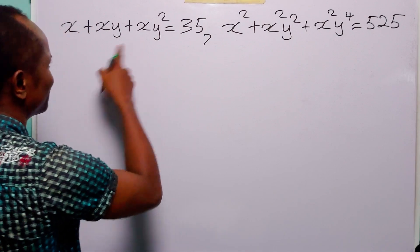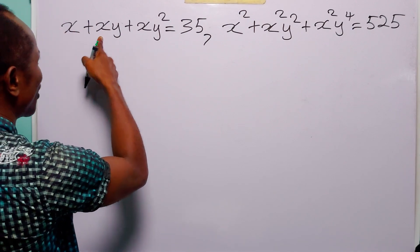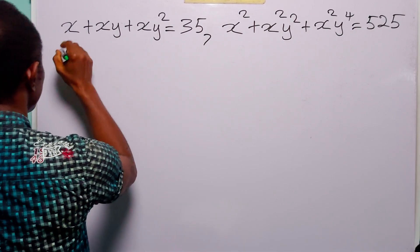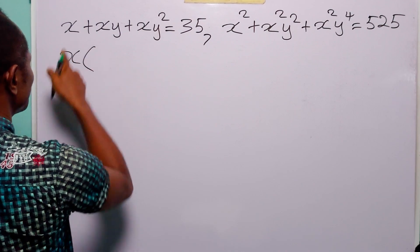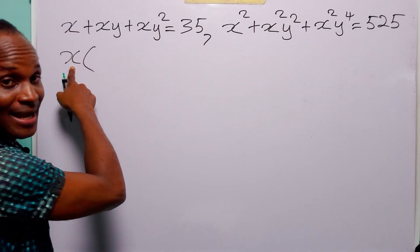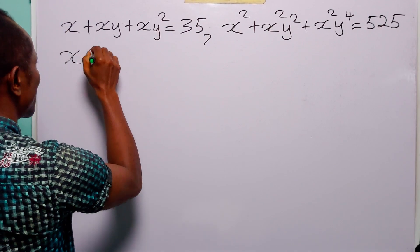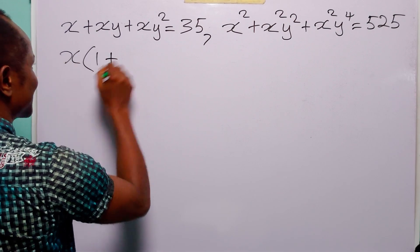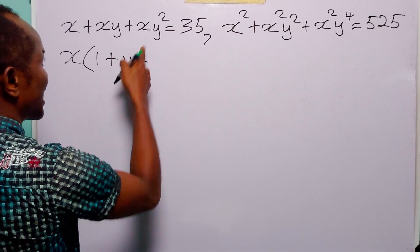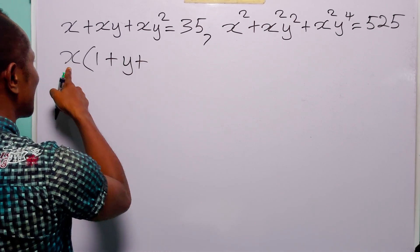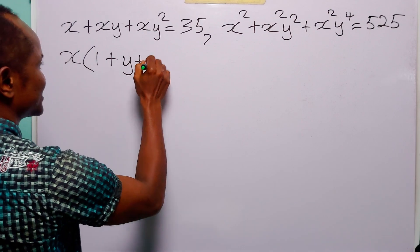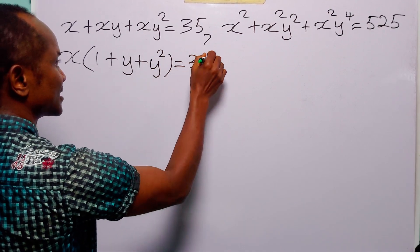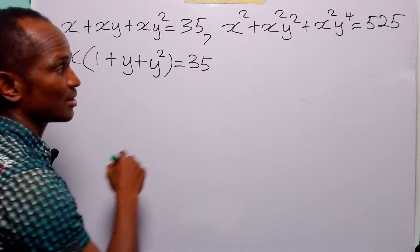When we come to the first equation, you will see that we have a common factor, which is x. So we have x into: x divided by x is 1, xy divided by x is y, and xy squared divided by x is y squared. And this is equal to 35.